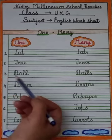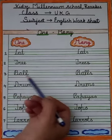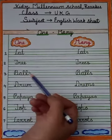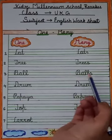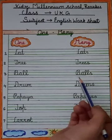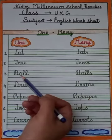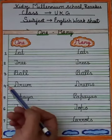Now the third one is b-a-double-l, ball. And many of ball is b-a-double-l-s, balls. Ek ball — ek se zyada balls.